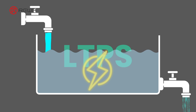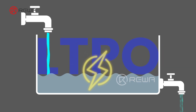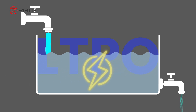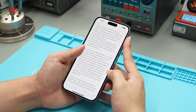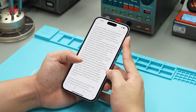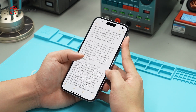LTPO: think of a pool combining LTPS's fast water filling with IGZO's slow leakage. This upgraded pool fills quickly and retains water much longer, maintaining a steady flow for stable low refresh rate displays without flickering. In short, LTPO's improved efficiency ensures smoother transitions and better performance across refresh rates, while conserving energy.